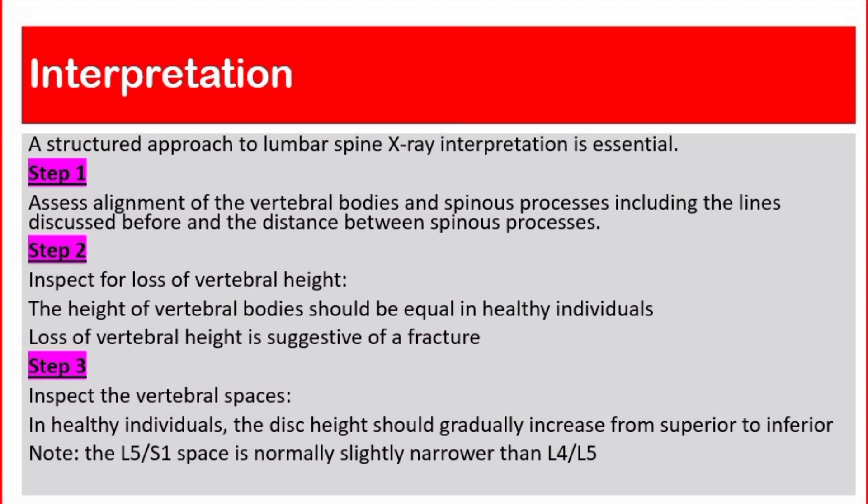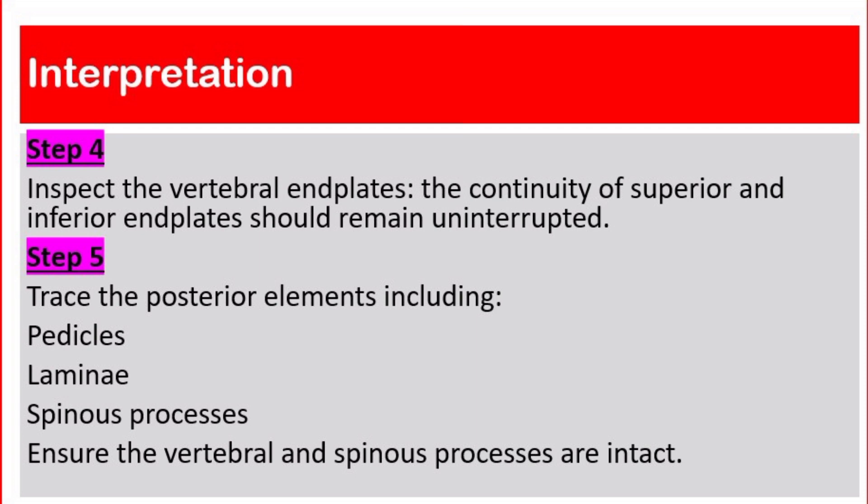Step 3: Inspect the vertebral spaces. In healthy individuals, the disc height should gradually increase from superior to inferior. Note that the L5-S1 space is normally slightly narrower than the L4-L5 space. Step 4: Inspect the vertebral end plates. The continuity of superior and inferior end plates should remain uninterrupted. Step 5: Trace the posterior elements, including pedicles, lamina, and spinous processes. Ensure the vertebral and spinous processes are intact.